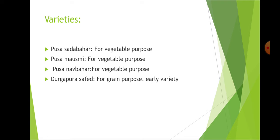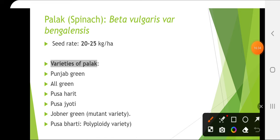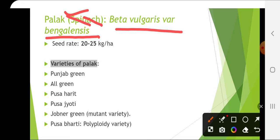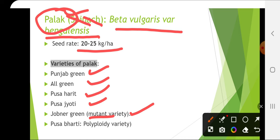The leafy vegetable palak (spinach) is Beta vulgaris variety bengalensis. It is not the same as spinach — spinach is Spinacia oleracea while palak is Beta vulgaris variety bengalensis; both are different. Seed rate is 20 to 25 kg per hectare. Varieties include Punjab Green, All Green, Pusa Harit, Pusa Jyoti, Jobner Green (a mutant variety) and Pusa Bharati (a polyploid variety).